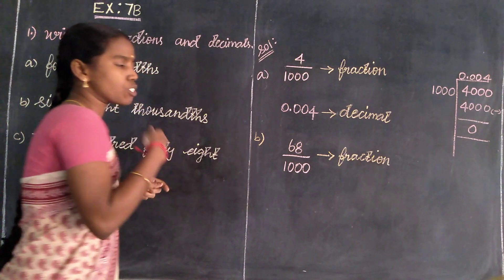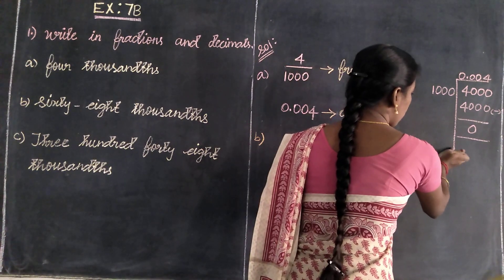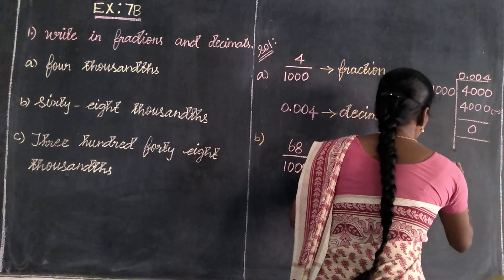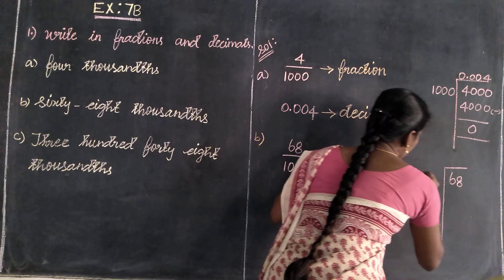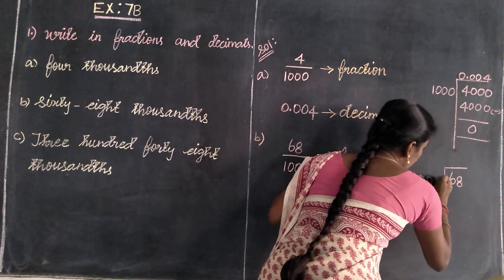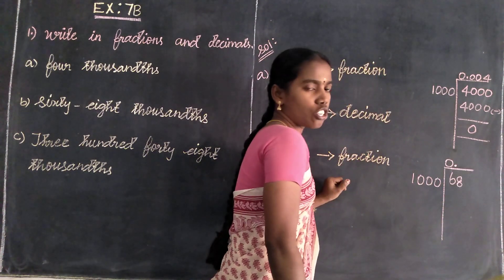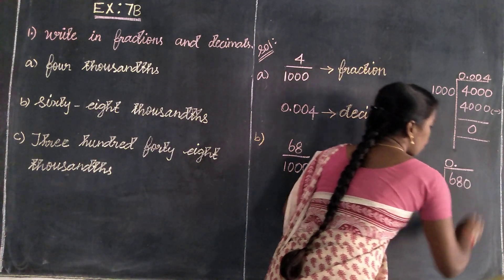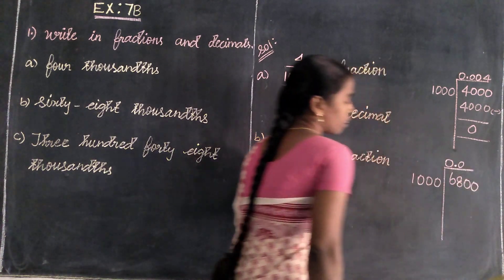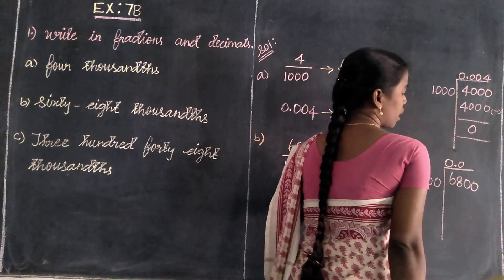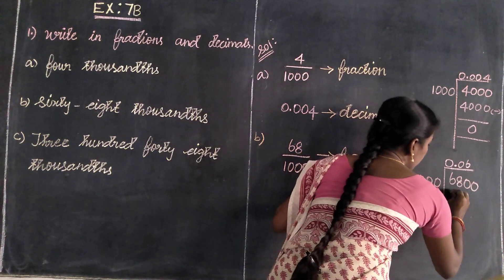Then, to change into decimal — divide this number. 68 is the dividend value and the divisor is 1,000. Divide: it is not possible directly, so we point out and add zero joint values. Six times into thousand is 60,000. Less this number — the answer is 800.